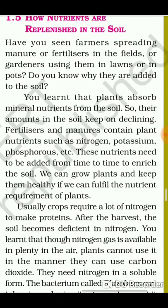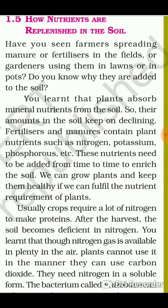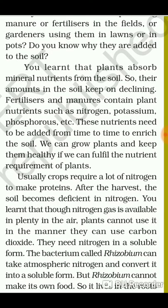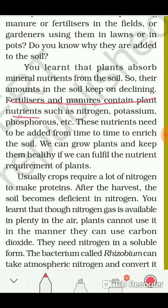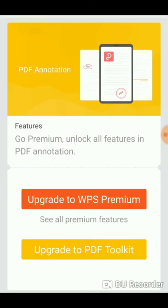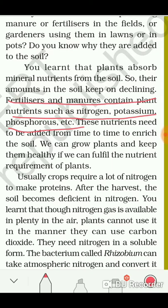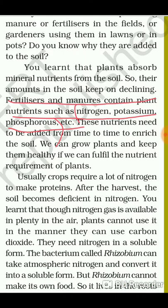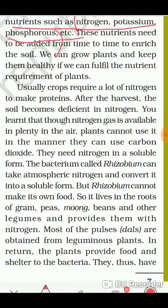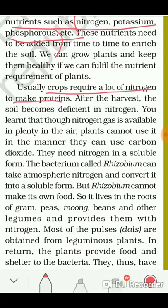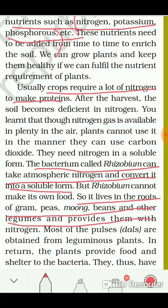Fertilizers and manures contain plant nutrients such as nitrogen, potassium, and phosphorus — these three are very important for plant growth. Crops require a lot of nitrogen to make proteins, but plants cannot directly absorb nitrogen from the air. A bacterium called Rhizobium can take atmospheric nitrogen and convert it into a soluble form dissolved in soil. It lives in the roots of gram, peas, moong beans, and other legumes — so when farmers grow these crops, they do not need to add additional fertilizers.